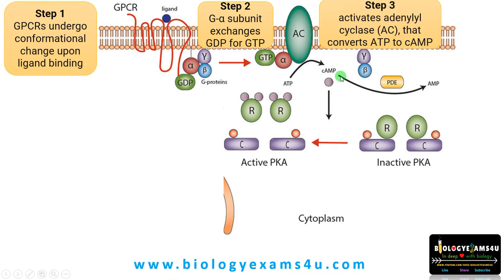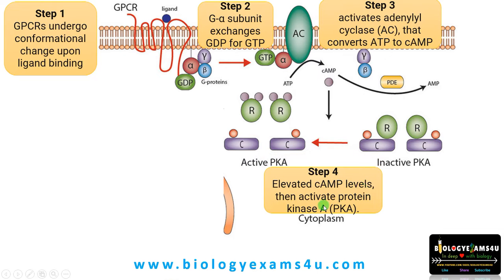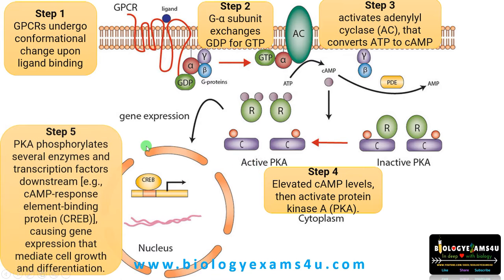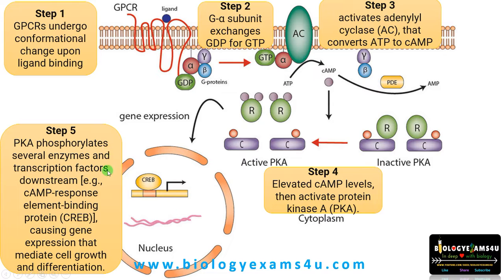cAMP is a second messenger that can activate inactive protein kinase A. Protein kinase A has two catalytic subunits and two regulatory subunits. In the fourth step, elevated cAMP levels activate protein kinase A. In step five, PKA phosphorylates several enzymes and transcription factors downstream, like CREB — cAMP response element binding protein — which can directly bind to DNA and cause gene expression. These genes mediate cell growth and differentiation.